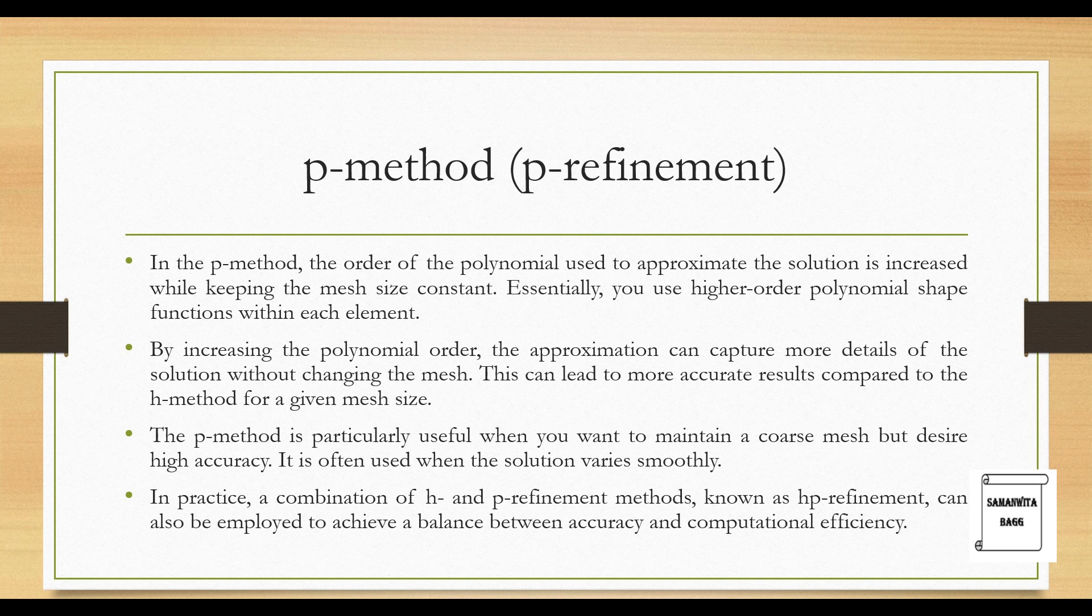In practice, a combination of H and P refinement methods known as HP refinement can also be employed to achieve a balance between accuracy and computational efficiency. So you can see that this method will be more accurate as compared to H method but computational efficiency is more for the H method. So what happens is you can use a combination of both and create a solution which will be a balance between both of them.